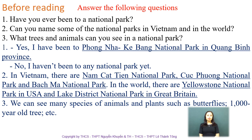For the second one, you can say: 'In Vietnam, there are Nam Cat Tien National Park, Phúc Phương National Park, and Bạch Mã National Park. In the world, there are Yellowstone National Park in the USA and Lake District National Park in Great Britain.' For number three, you can say: 'We can see many species of animals and plants such as butterflies, 1,000-year-old trees,' etc.